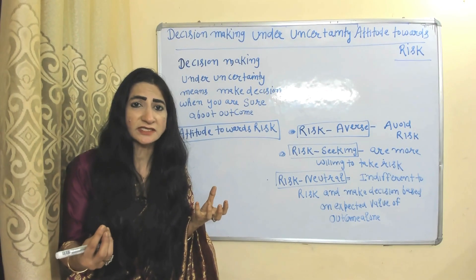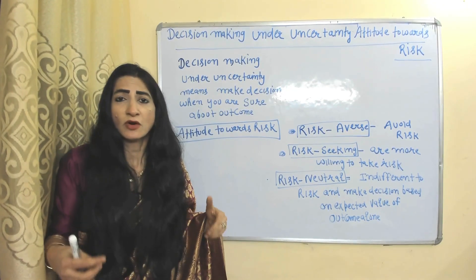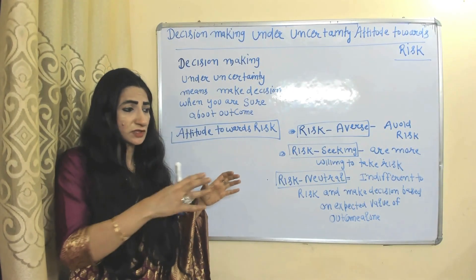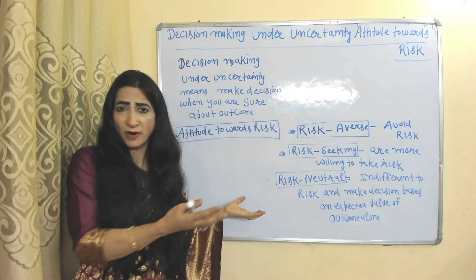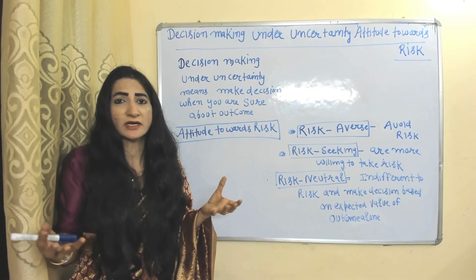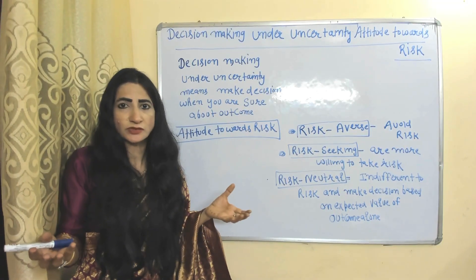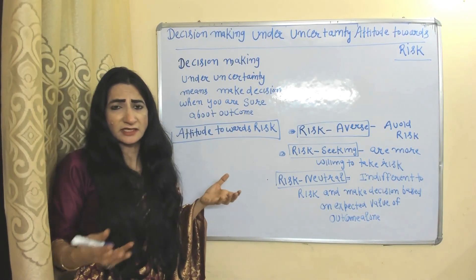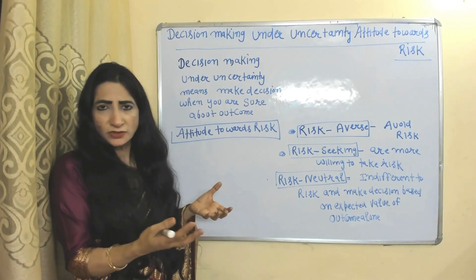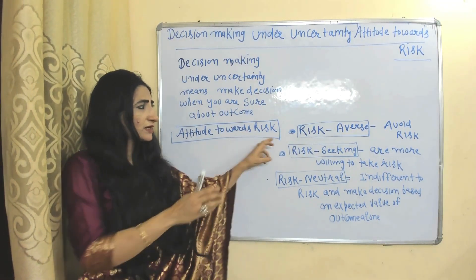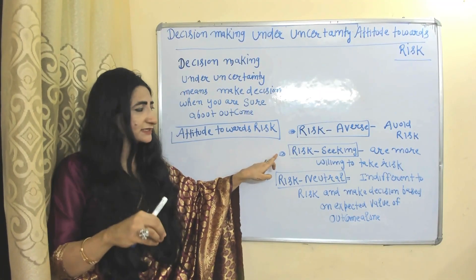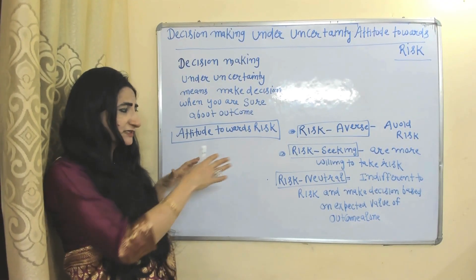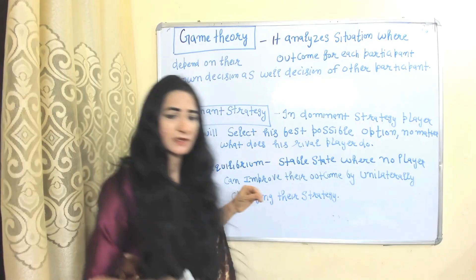Decision making under uncertainty means making decisions when you are not sure about the outcome. For example, an investor choosing between investment projects is not guaranteed an outcome; a household deciding whether to buy house insurance; or choosing whether to buy a lottery ticket. In all these cases the person is uncertain about the outcome. Attitudes towards risk: if you avoid risk you are risk-averse; if you are willing to take more risk you are risk-seeking; a risk-neutral person is indifferent to risk and bases decisions on expected value alone.